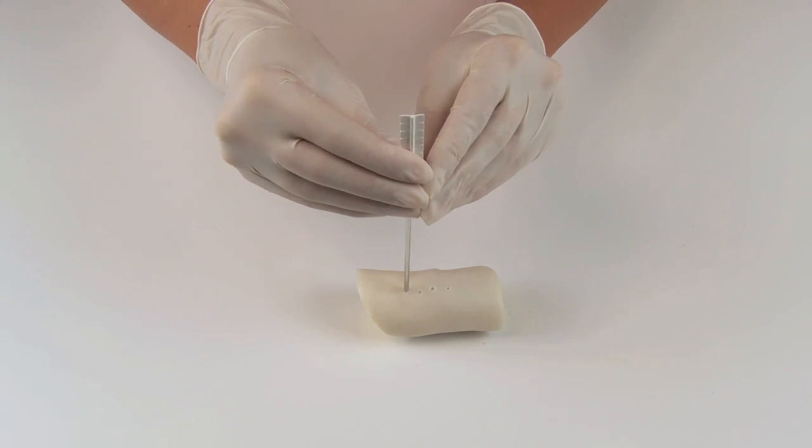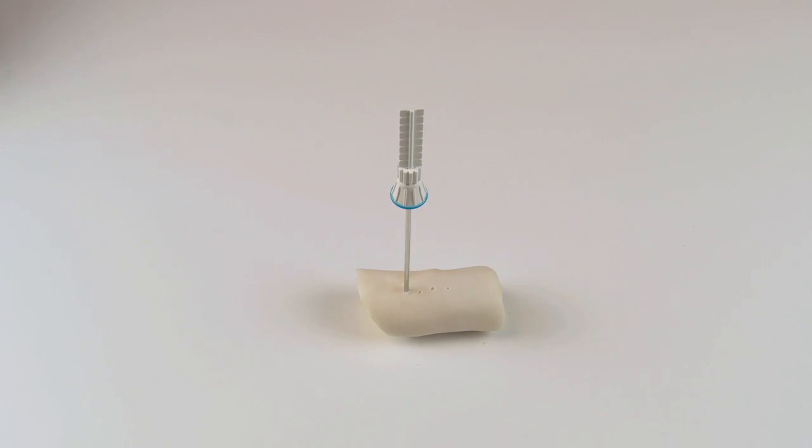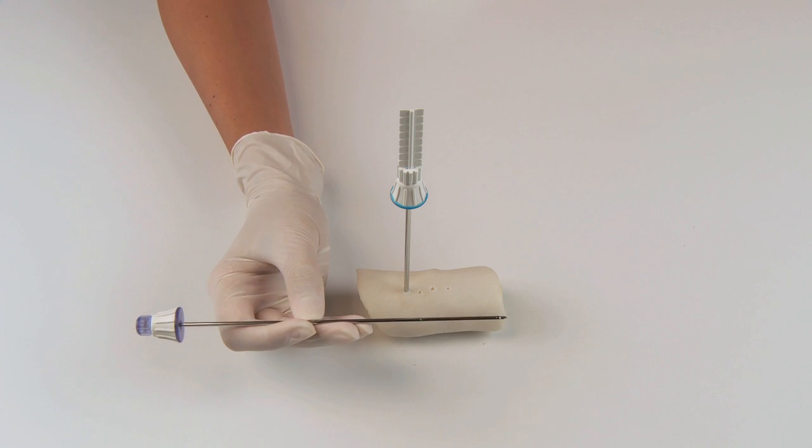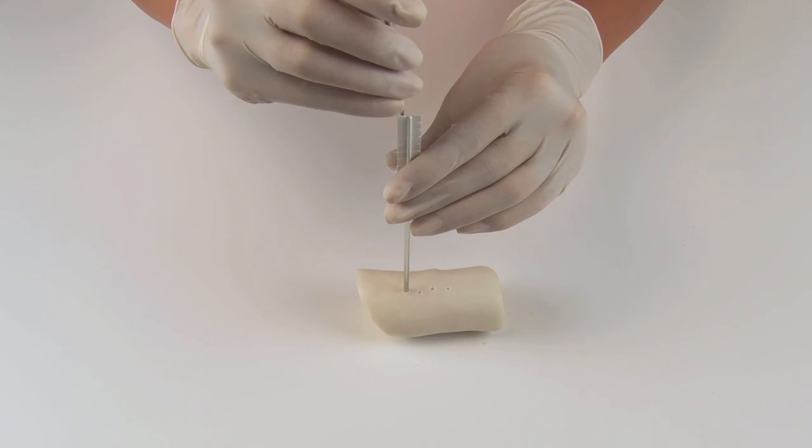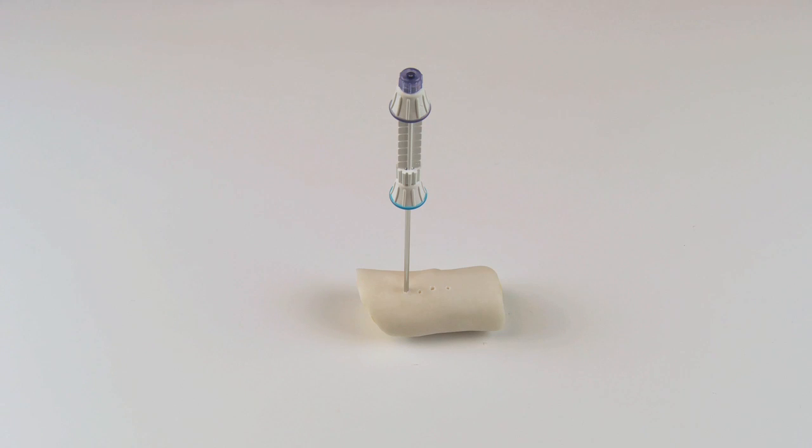Click the depth gauge onto the top of the penetration cannula hub. Insert the biopsy needle. The tip of the biopsy needle will then align with the tip of the penetration cannula.